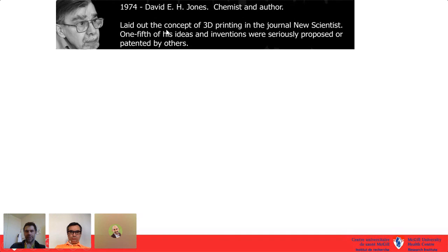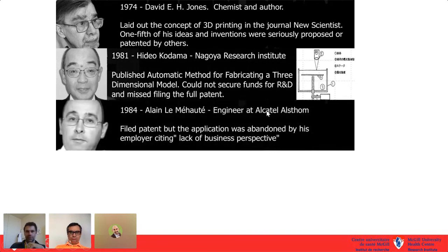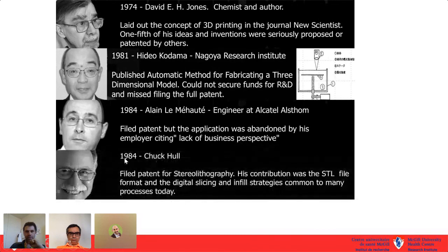The idea for 3D printing emerged in 1974 when David Jones, an author for New Scientist, first laid out the concept. Out of Japan came the first designed 3D printer, but no funds were available and no patent was issued. The same happened in 1984 when a French engineer mapped out a plan but the employer didn't pursue a patent. It wasn't until Chuck Hull came along in 1984 and patented the first stereolithography 3D printer — his major contribution being the STL file — and founded the company 3D Systems.